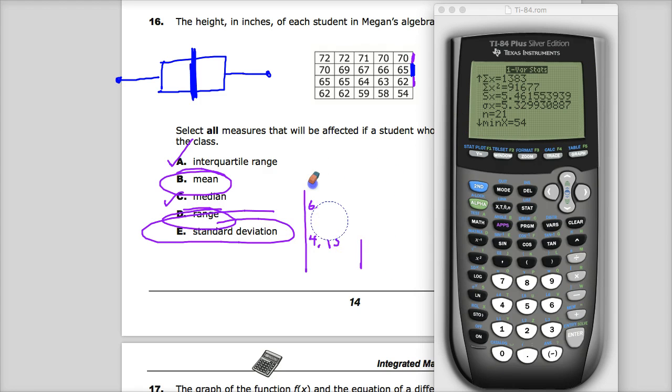Now, that doesn't match the key that you're given, by the way. I can erase anything that's not an answer choice. So your answers are B, D, and E. The key that you're given says only B and D, but the standard deviation does change because by adding that extra number on top, it shifts the overall deviation from the mean.